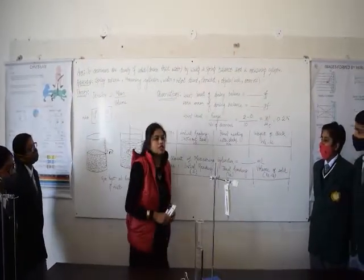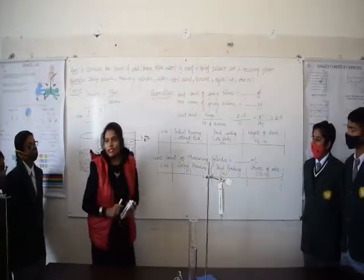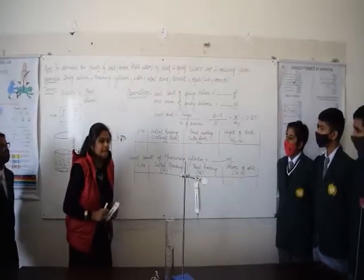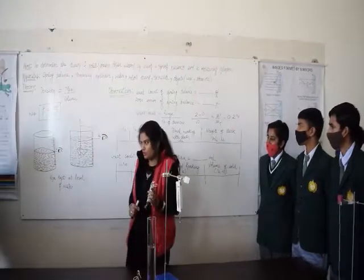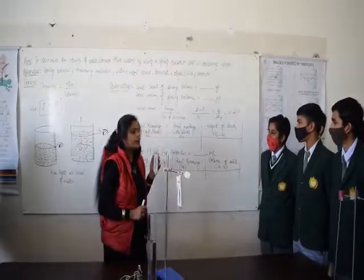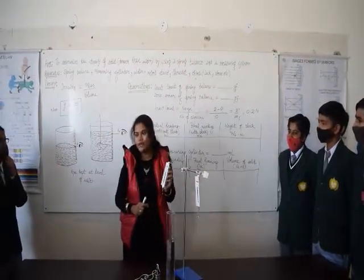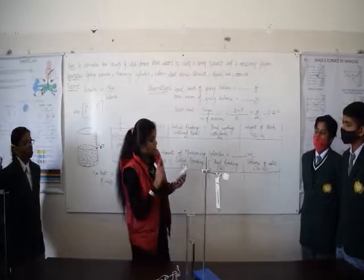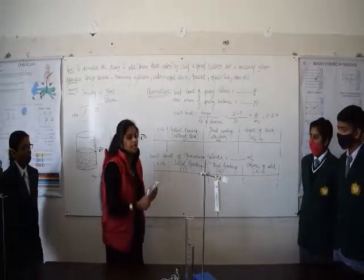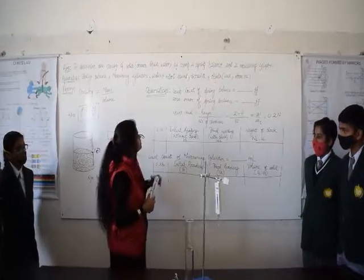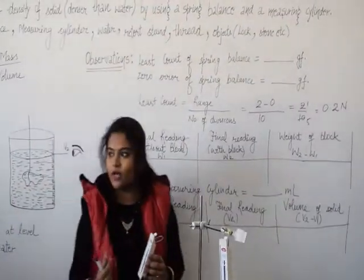After that we have observations. First thing to calculate or to use some equipment is that we should know the least count of that instrument. Which instrument we are using here? Spring balance. I told you earlier also. This spring balance you know will be calculated and then you will be able to know the zero error of spring balance. What is zero error?